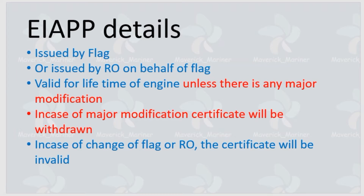The EIAPP is issued by the flag state, or by a Recognized Organization (RO) on behalf of the flag. Since the flag is not present everywhere, the flag passes its regulations to the RO. The RO then performs a survey as per the flag's requirements, and if satisfied that the engine has been tested and certified accordingly, it can issue an EIAPP on behalf of the flag.